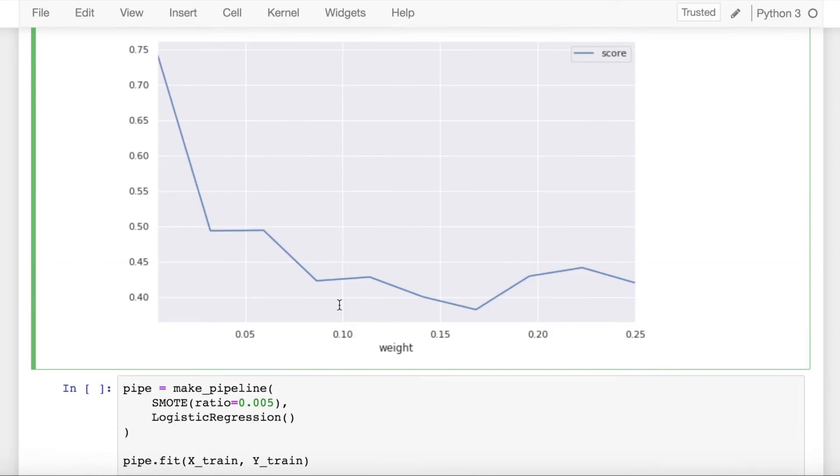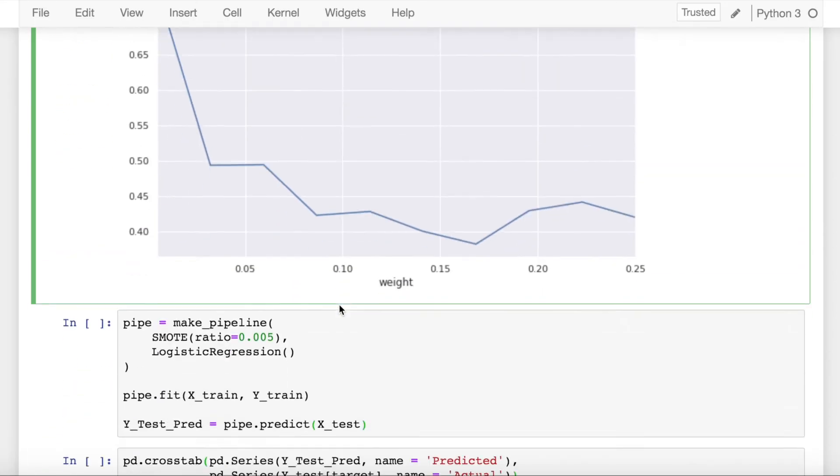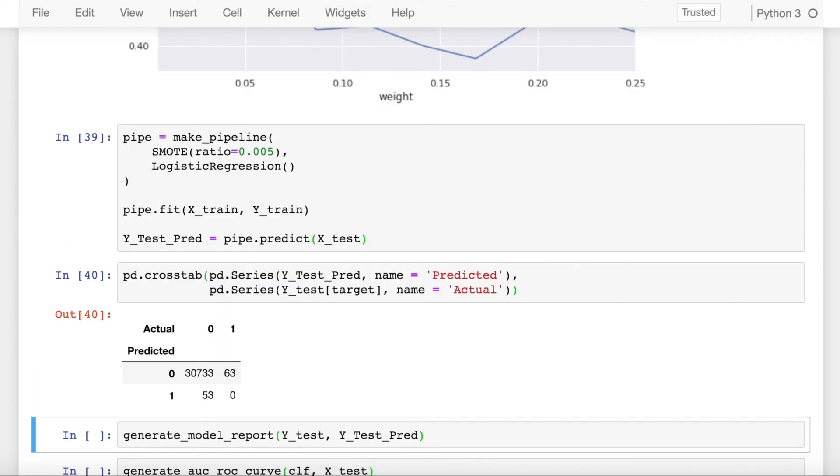So now I'll be using that same value of 0.05 and making a logistic regression module, fitting it to my training data again and then validating it. So now when I find out the confusion matrix, now there is a perfect balance between false positives and false negatives.